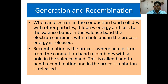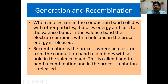When an electron in the conduction band collides with other particles, it loses energy and falls to the valence band. In the valence band, the electron combines with a hole and in the process energy is released. Recombination is the process where an electron from the conduction band recombines with a hole in the valence band. This is called band-to-band recombination and in the process a photon is released.